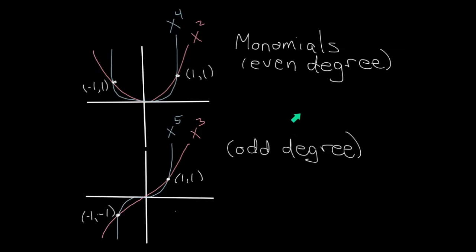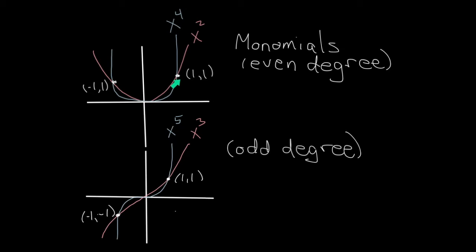Let's first remember how to graph monomials. Mono means one, so monomials are just like polynomials except they only have one term. You should know what the graph of x squared looks like coming into this course. We also have x to the fourth, x cubed, and x to the fifth. There are some small details about this graph that I do hope you remember from pre-calculus.